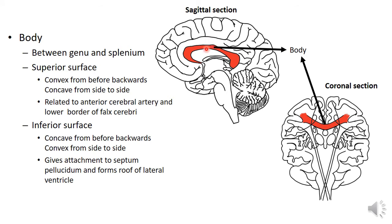Coming to the inferior surface, it is concave from before backwards and convex from side to side. It gives attachment to the septum pellucidum — this thin septum here — and forms the roof of the lateral ventricle.